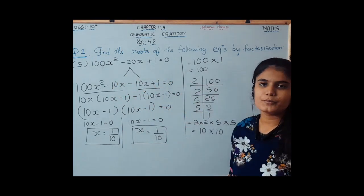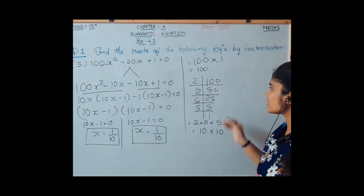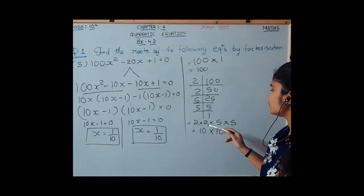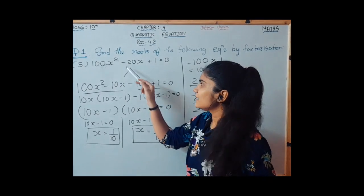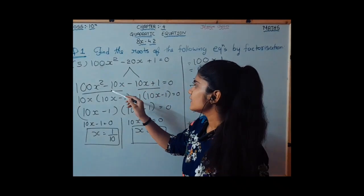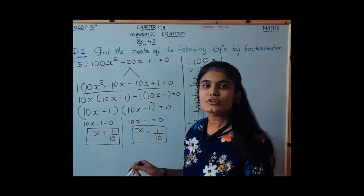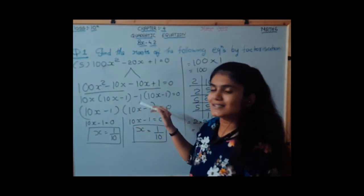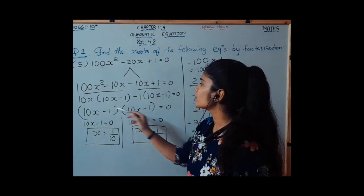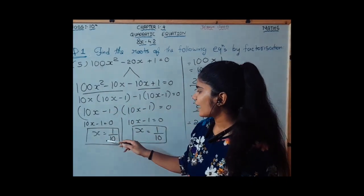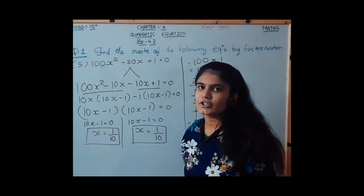We follow the same method: 100 into 1 equals 100, and the factors are 10 and 10. Splitting the term minus 20x as minus 10x minus 10x gives the four-term equation 100x squared minus 10x minus 10x plus 1 equals 0. By making pairs and taking out common factors, we get x equal to 1 upon 10 and 1 upon 10 — both roots are the same.